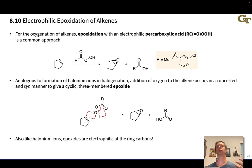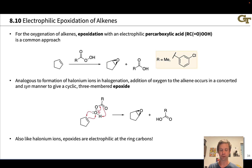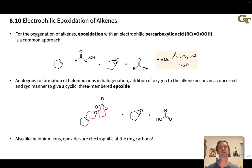The first approach, which ultimately leads to anti-dihydroxylation — stereospecific anti-dihydroxylation of an alkene — involves the formation of an epoxide. An epoxide is a three-membered cyclic ether with an oxygen atom and two carbon atoms in a ring. One of the most common approaches for epoxidation involves treatment of an alkene with a percarboxylic acid.